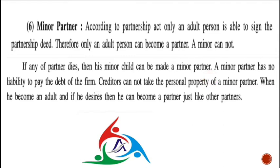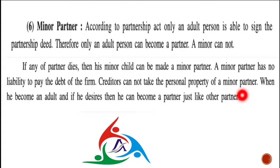For example, if A, B, and C are three partners, and C has a son who is 15 years old, that son is considered a minor. A minor partner has no liability to pay the debt of the firm. Creditors cannot take the personal property of a minor partner. The liability that would otherwise be unlimited does not apply to a minor partner.